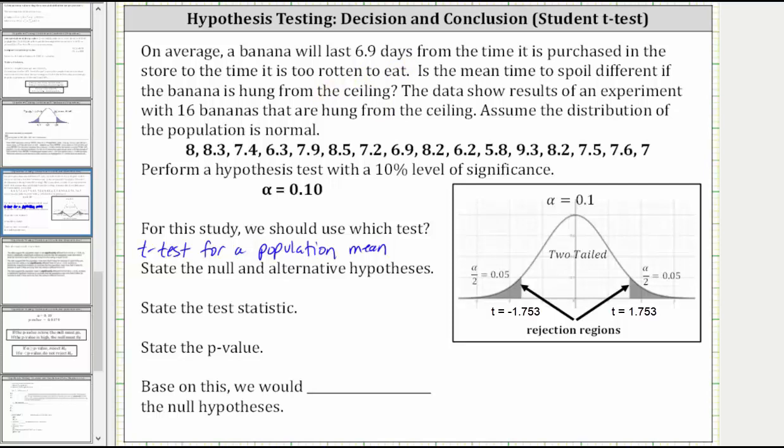Which means the null hypothesis, H sub zero, is mu equals 6.9. And if it is different, the alternative hypothesis, H sub a or H sub one, is mu doesn't equal 6.9. Notice how because of the doesn't equal, we are going to have a two-tailed test.